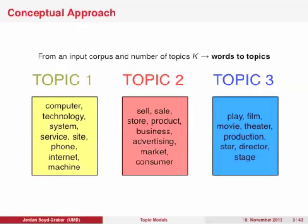For instance, if we have a decade's worth of the New York Times and you ask it to find 50 topics, here are three of the topics you get out. We represent these topics as a list of words. One topic is a technology topic, another is a business topic, and another is an entertainment topic. And then there are 47 other topics.